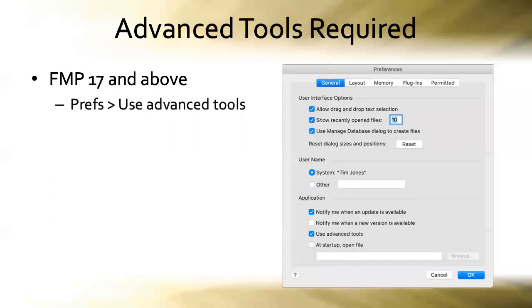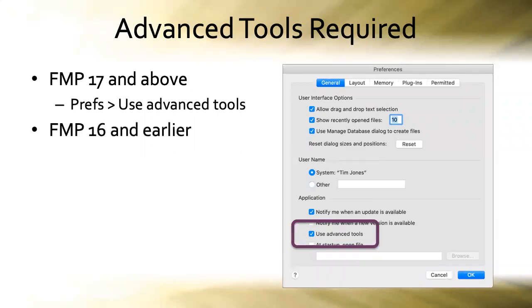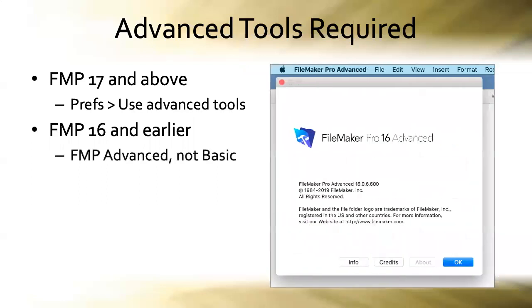You must be using FileMaker's advanced tools to be allowed to manage custom menus. In FileMaker 17 and above, use the Preferences command to enable these advanced tools. In FileMaker 16 and earlier, you had to have purchased the advanced version of FileMaker Pro. The basic version does not include the ability to manage custom menus, though it will show custom menus in a database that has them.